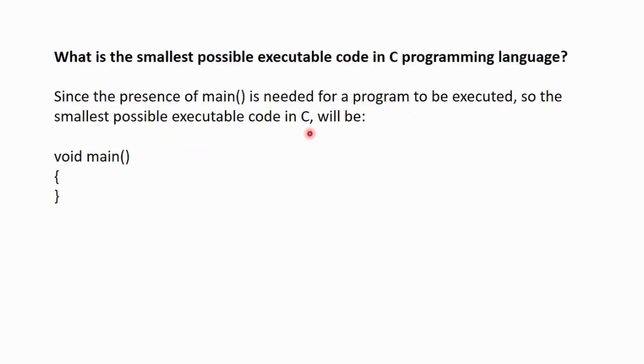Next question, what is the smallest possible executable code in a C programming language? Since the presence of main function is needed for a program to start its execution, the smallest possible executable code in C, it is mandatory to include a main function. So, the code will be void main, parentheses open and close, and braces open and close. That means, it will only contain a main function with parentheses but no arguments and no body. This code will be compiled also, it will be executed also, but it will not do anything. This is the smallest possible executable code in the C programming language.